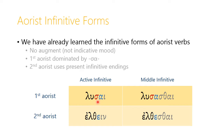The first aorist infinitive forms are dominated by the sigma-alpha combination — sigma being the first aorist tense marker and alpha the connecting vowel. So we have the first aorist active infinitive lusai and the middle infinitive lusasthai. With the second aorist, we find the second aorist stem with the epsilon connecting vowel and present infinitive endings: elthein in the active and elthesthai in the middle.